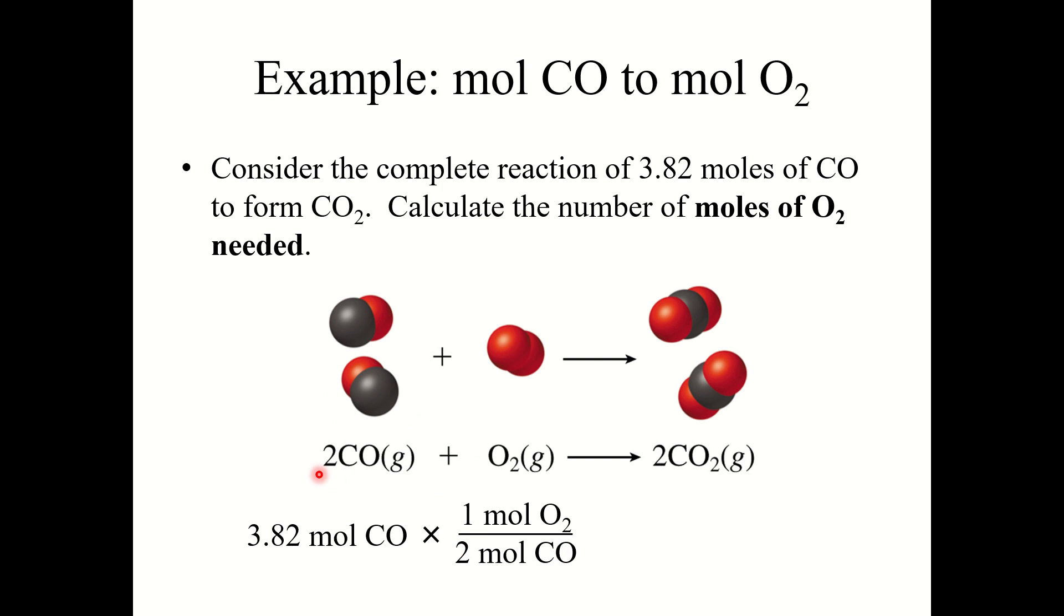I'm going to use those coefficients as a stoichiometric ratio or as my conversion factor. So I'm going to write 2 moles CO on the bottom and 1 mole O2 on top. So now mole CO cancels. I got 3.82 times 1 divided by 2 gives 1.91. So my answer, 1.91 moles O2 would be required.